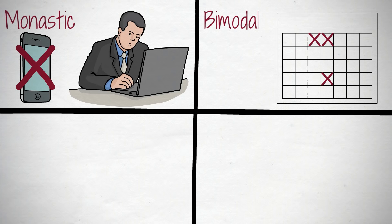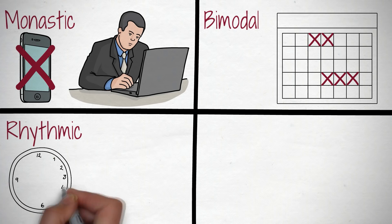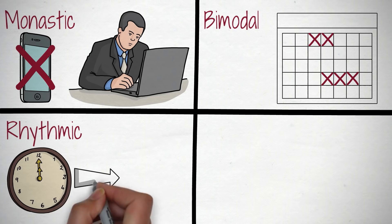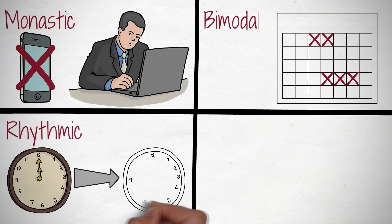Rhythmic. The easiest way to consistently start deep work sessions is to transform them into a simple, regular habit. The rhythmic philosophy involves creating a routine where you define a specific time period — ideally three to four hours every day — that you can devote to deep work.